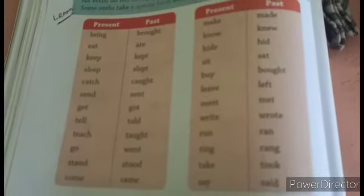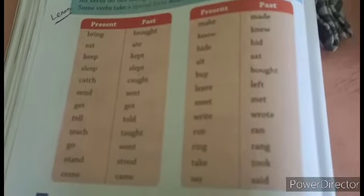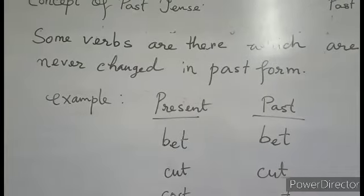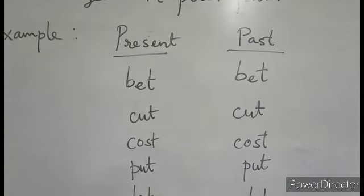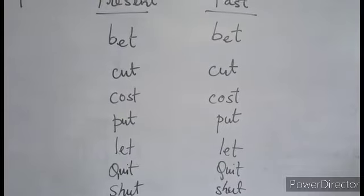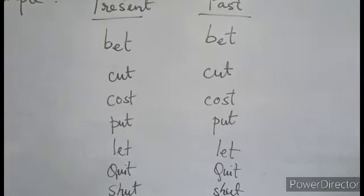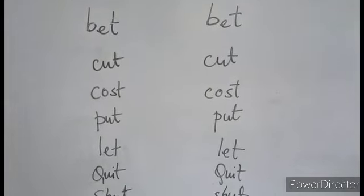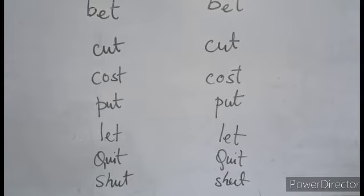Some verbs never change in their past forms — they always remain the same in present form, past form, and past participle form. For example: bit — past form is also bit. Cut — C-U-T — past form is C-U-T. Cost — present form is cost, past form is also C-O-S-T. Put — put. Let — let. Quit — past form is also quit. Shut — past form is also shut.